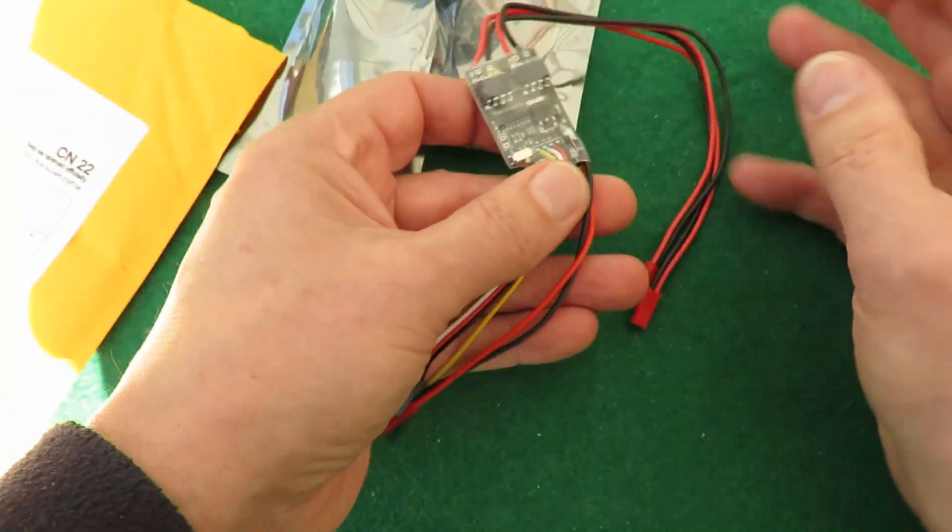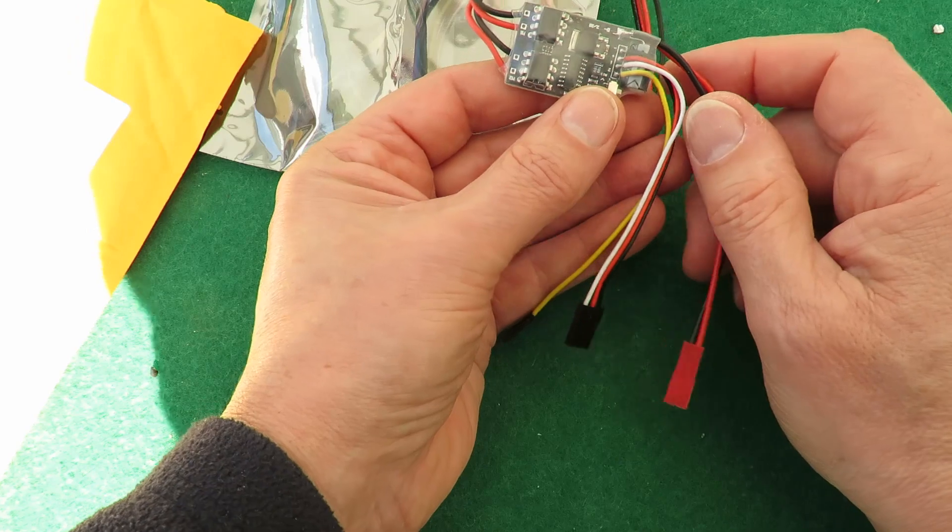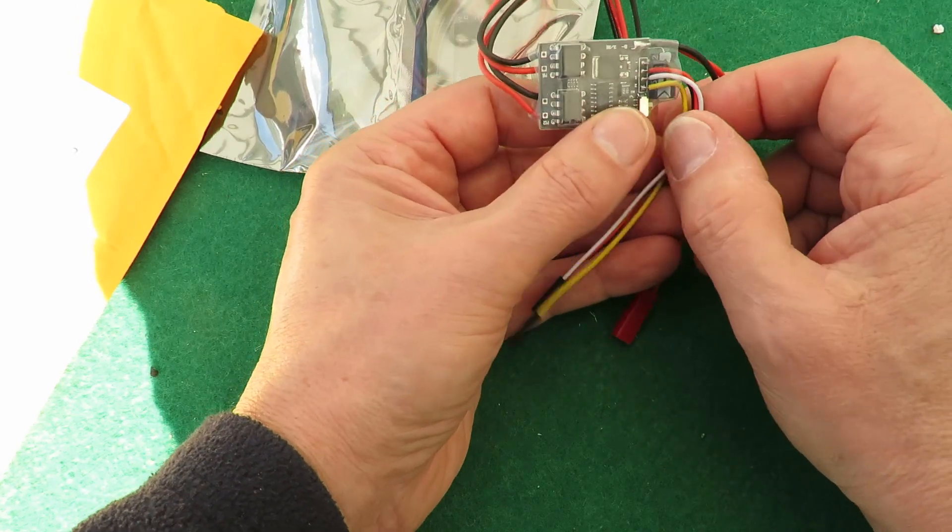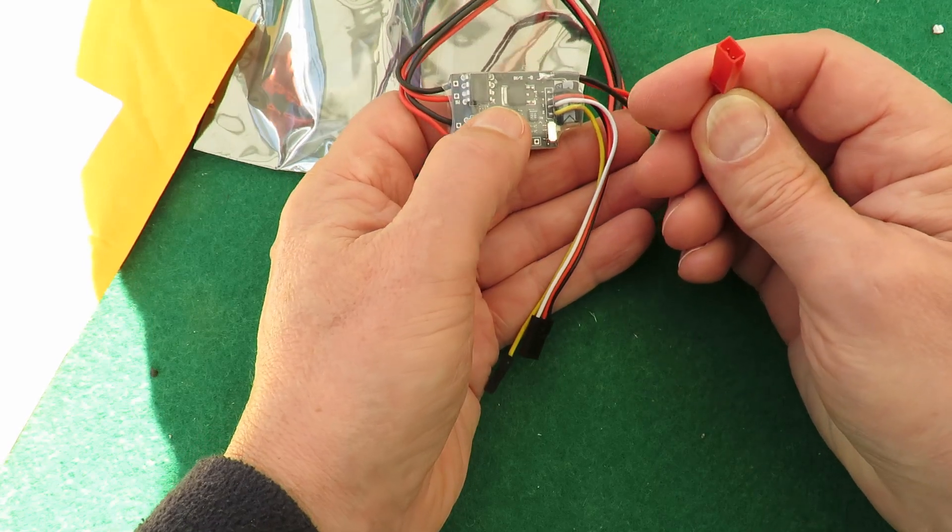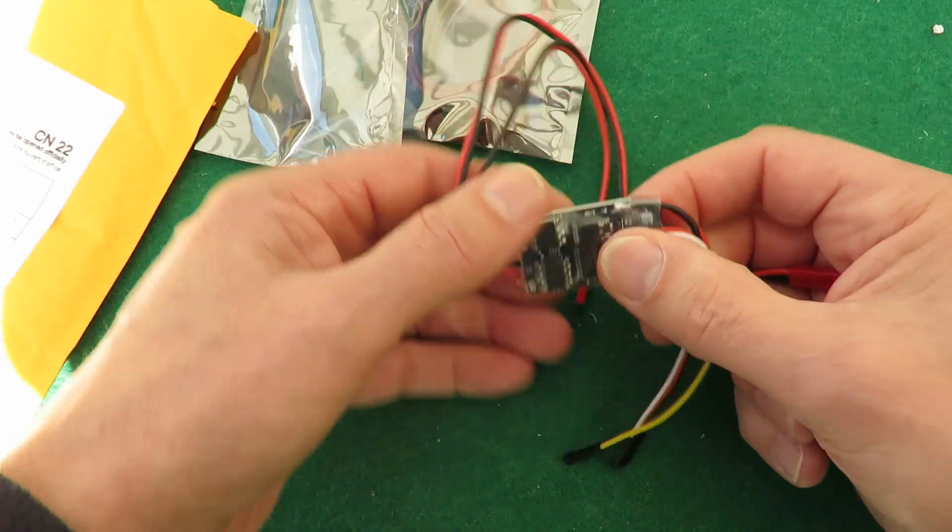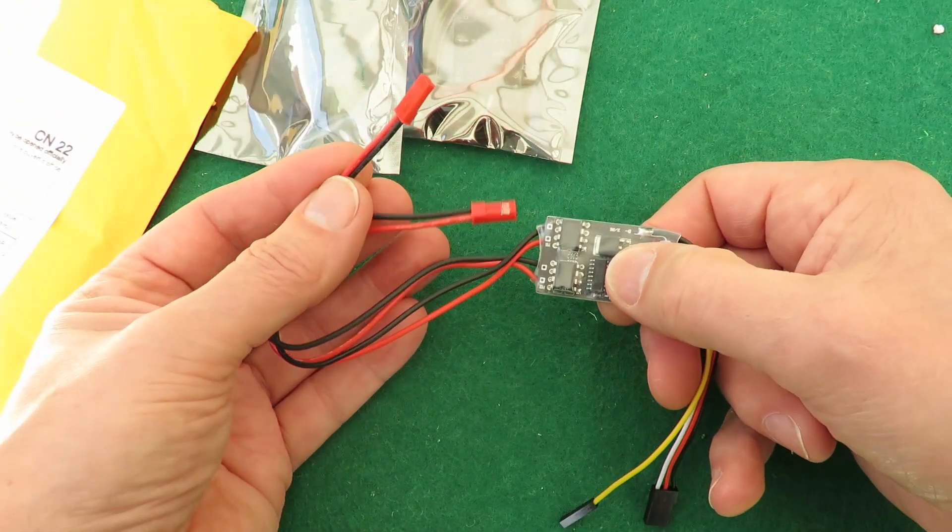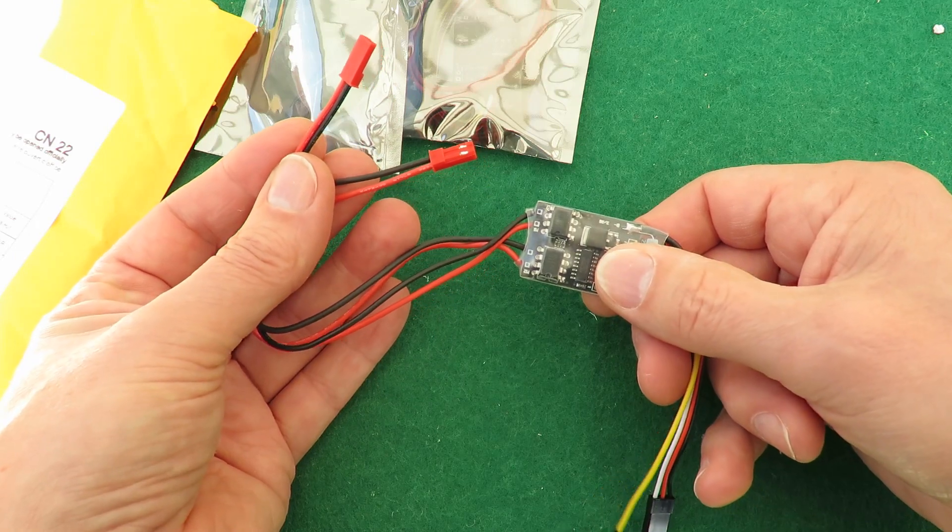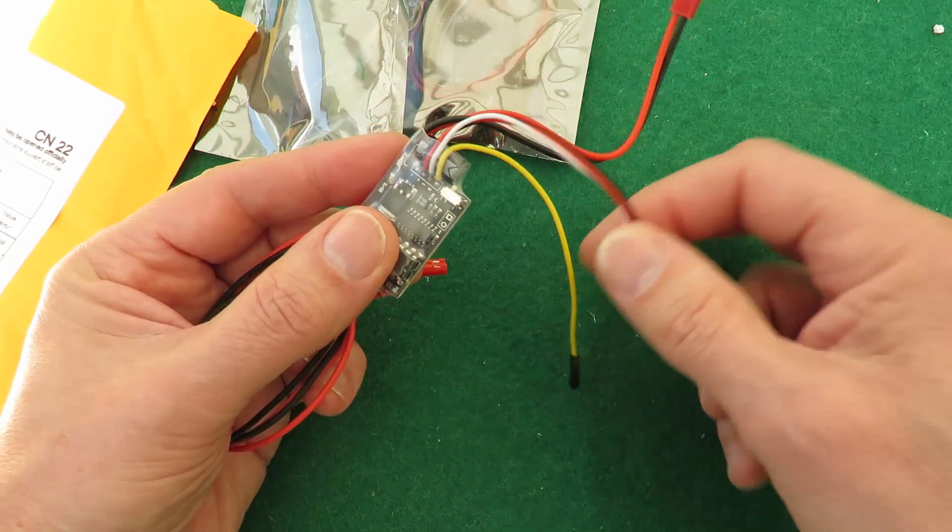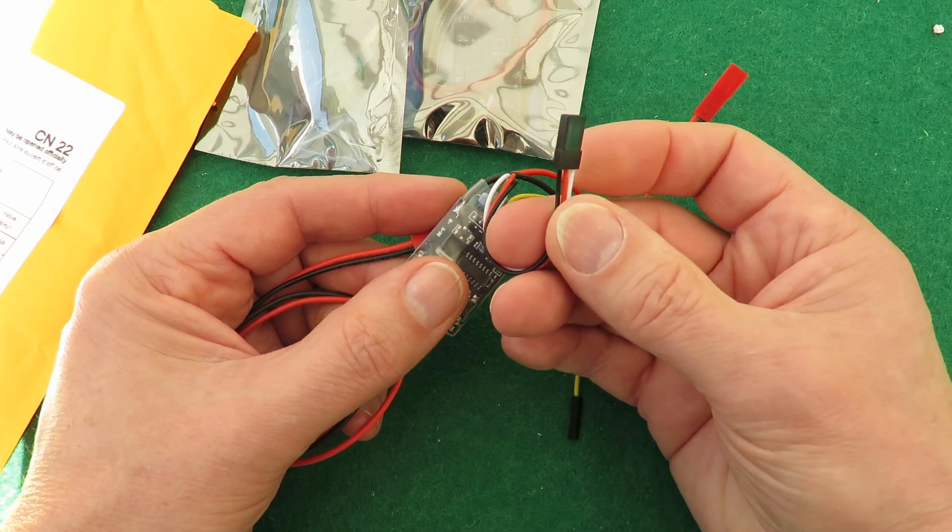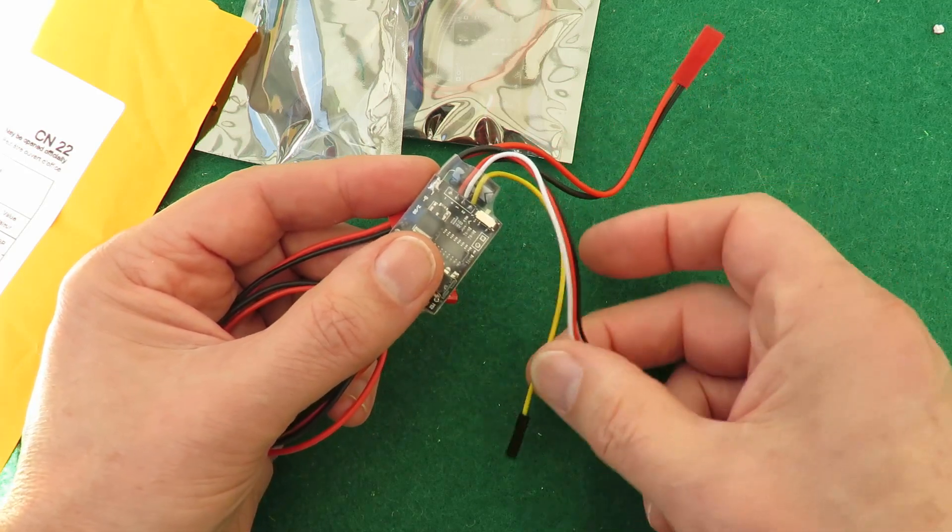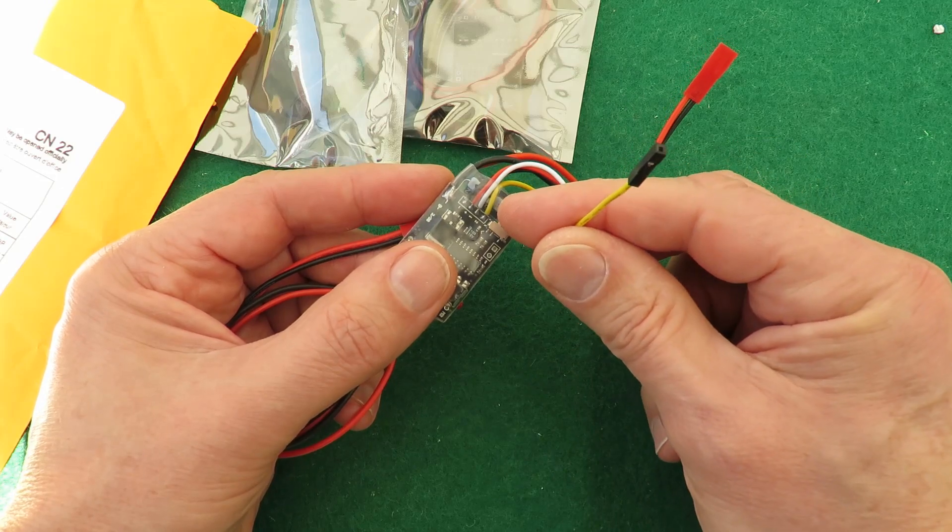Right. These are special ESCs. I'll call them special because one battery in, two motors out. That goes to your normal motor channel. And that one goes to your servo channel.